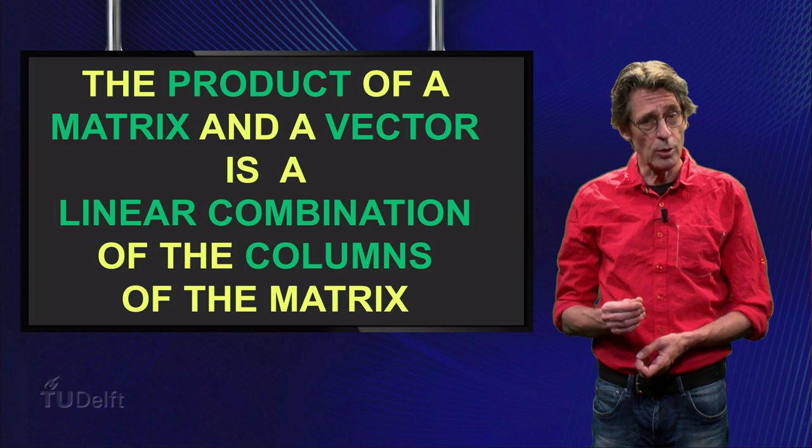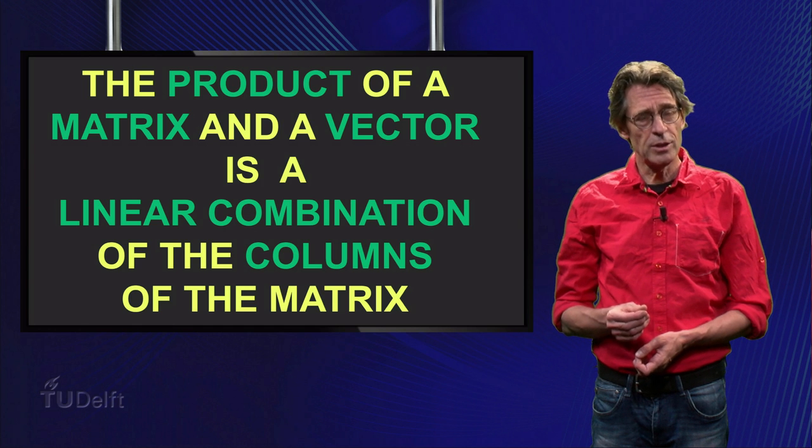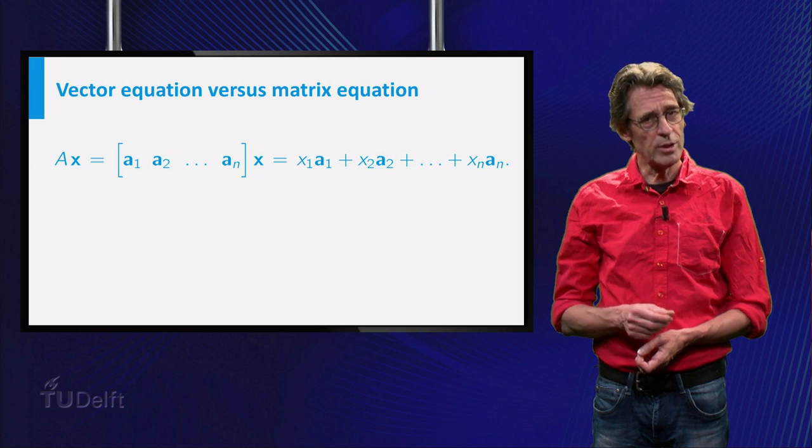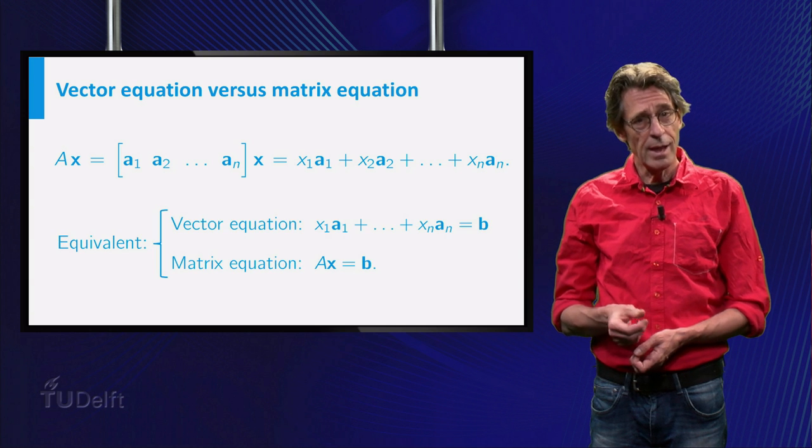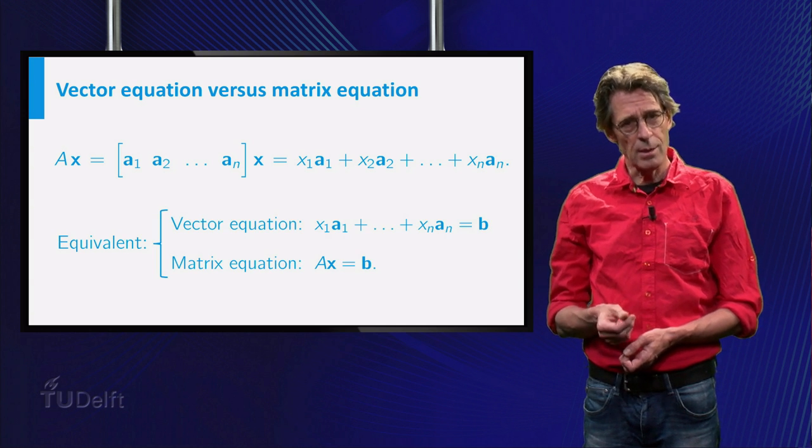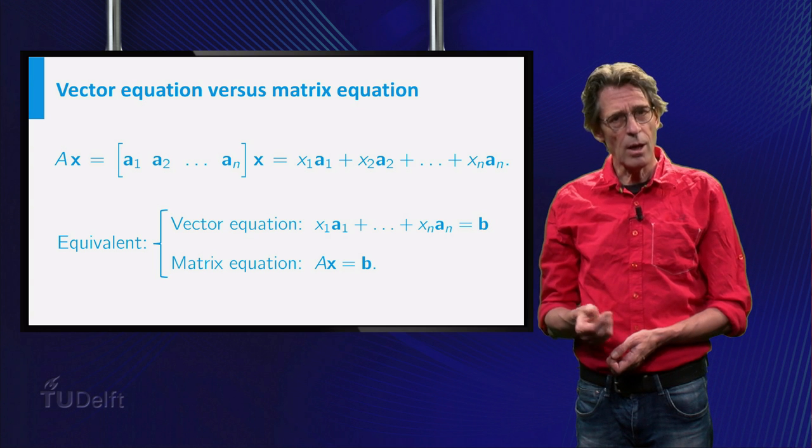It immediately follows that the vector equation x1a1 plus x2a2 up to xnan equals b and the matrix equation A times x equals b are one and the same thing.